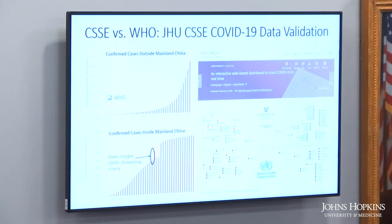There are a few discrepancies — for instance, when Hubei province changed their reporting criteria and started reporting clinically diagnosed cases, there was a huge jump of about 15,000 cases reported that day. We captured it at the time; WHO captured it a few days later.